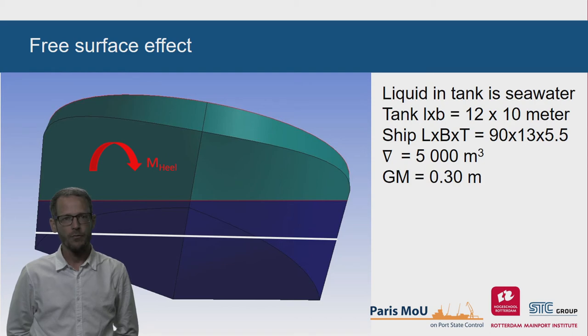An example: if a ship of 90 meters long carries seawater in a tank of 10 meters long and 12 meters wide, we can calculate the reduction in GM.